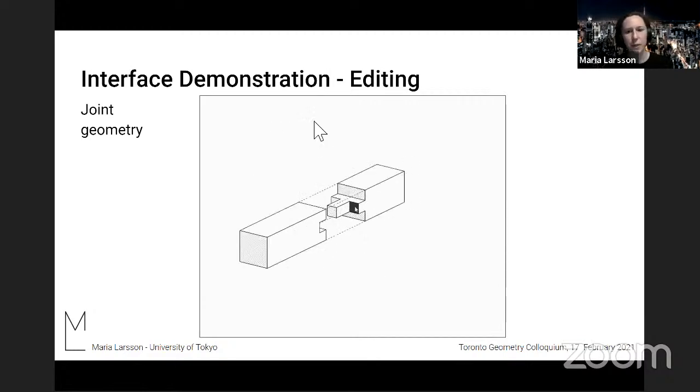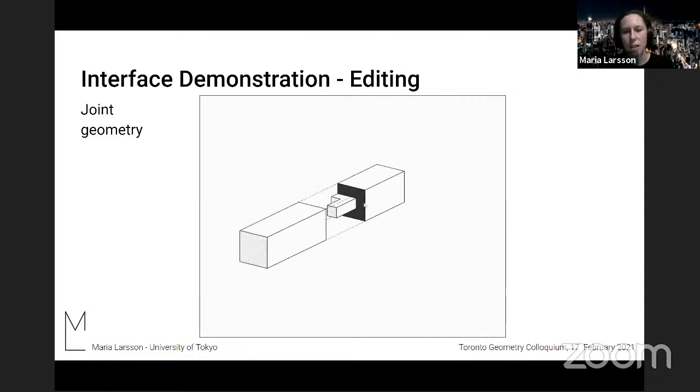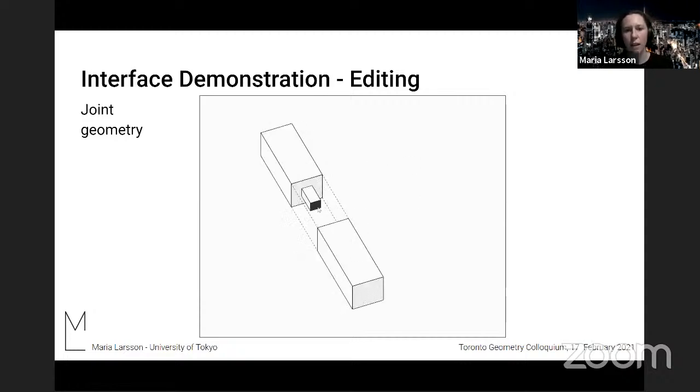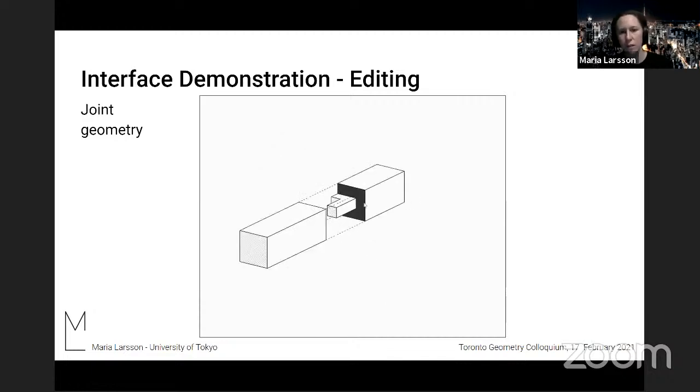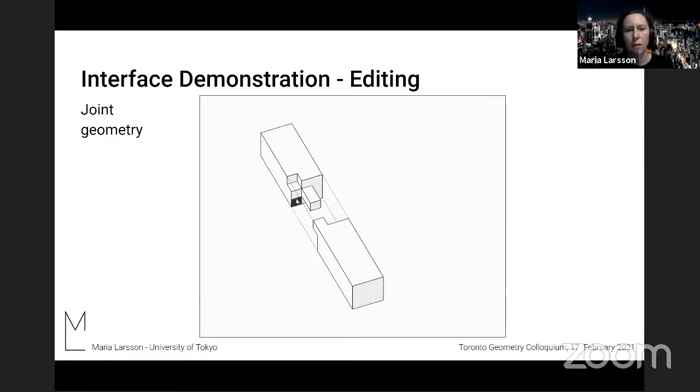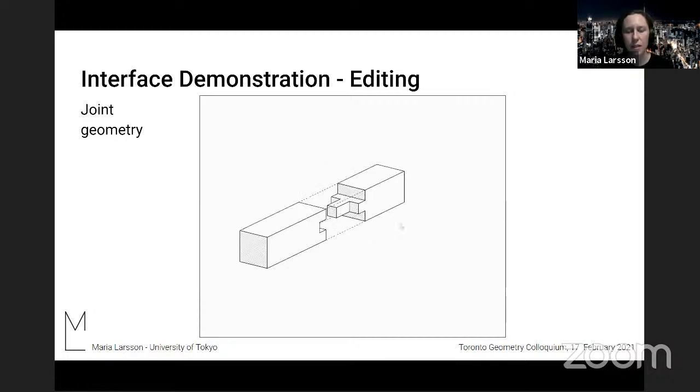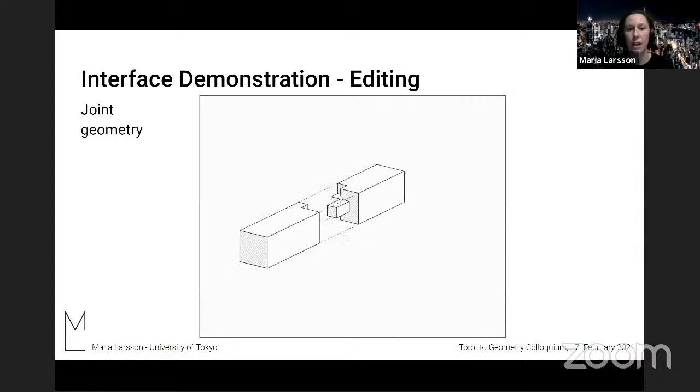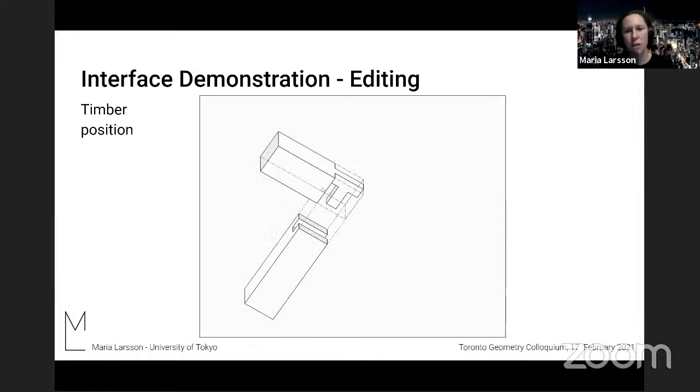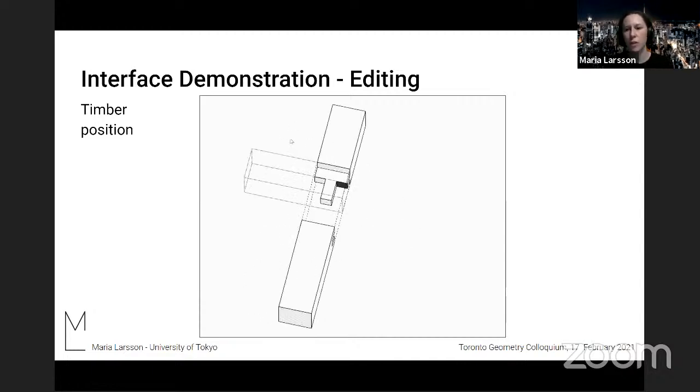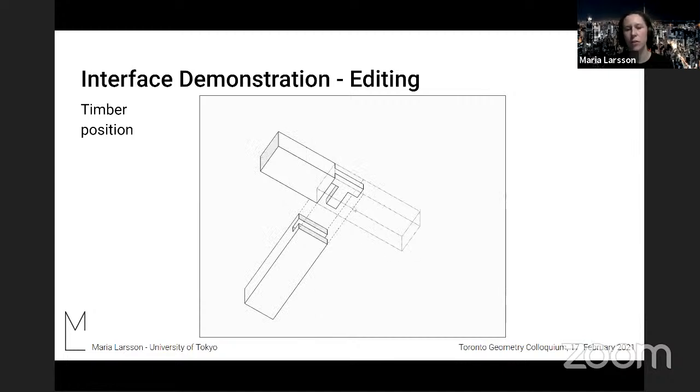And so what you see here is an animation of how to edit a joint by pushing and pulling on the faces. And as you can see, this action is synchronized. So if you add a voxel somewhere, it's removed somewhere on the corresponding side. And what you also see perhaps is that the design is kind of limited to this voxelized design space. And you can change, depending on what you're making, you can change the position of the timber. But we only focus on one joint at a time.